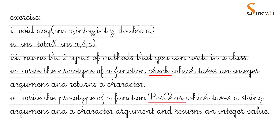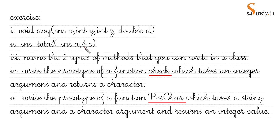Let's take up some practice questions. First: 'void average(int x, int y, int n, double t)' — this has four parameters, return type is void, and method name is average. Second question: what is the error in 'int total(int a, b, c)'? The mistake is that the data type of each parameter must be specified; it should be corrected to 'int total(int a, int b, int c)'.